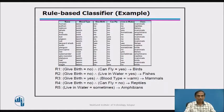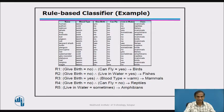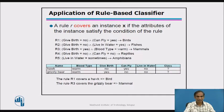Here is a rule-based classifier example. A rule generated from the data set states: given birth being 'no' and can it fly being 'yes', then it is classified as a bird. The arrow represents the 'then' part of the statement.